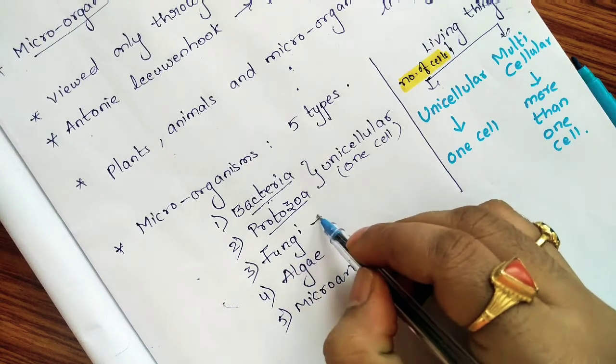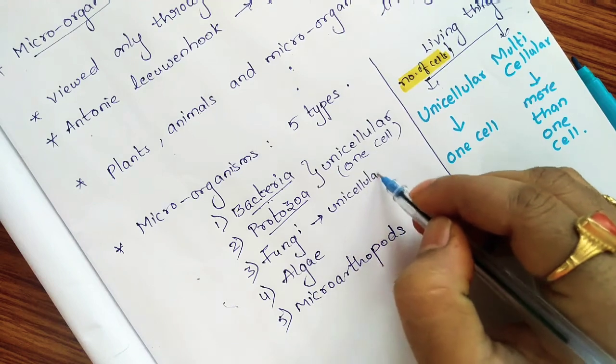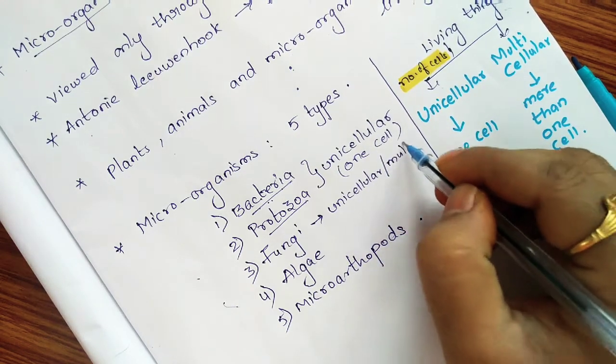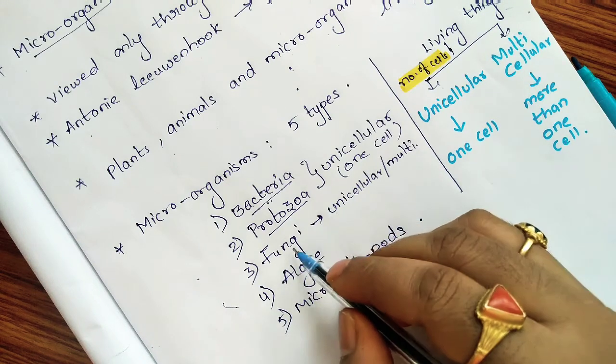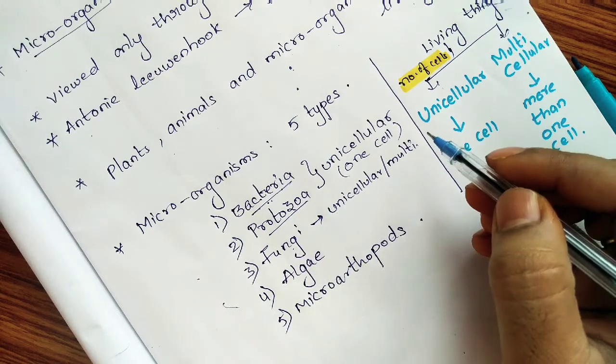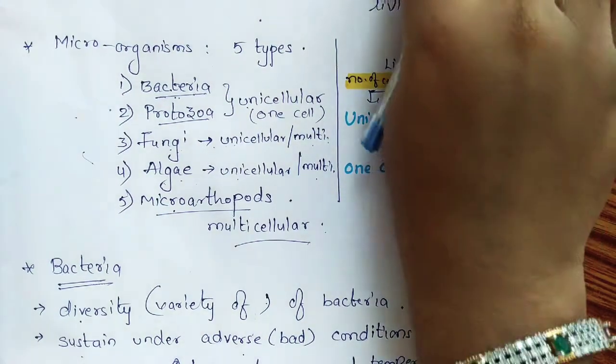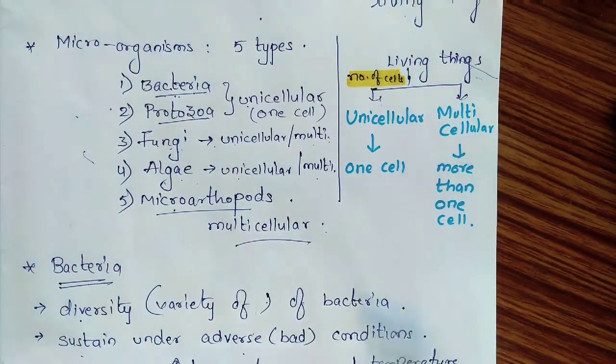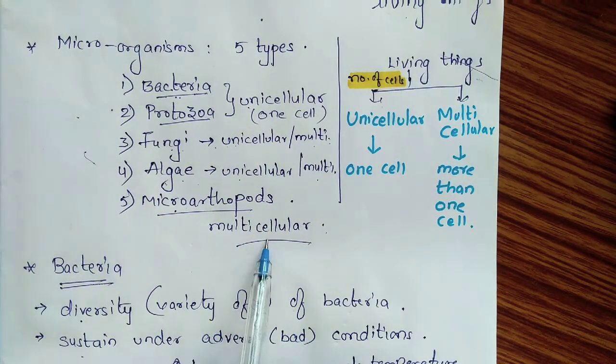Coming to fungi, some fungi are unicellular and some are multicellular. Fungi are two types again: unicellular fungi and multicellular fungi. Algae are also two types, unicellular and multicellular. Micro-arthropods are multicellular microorganisms.